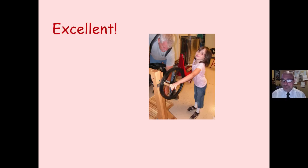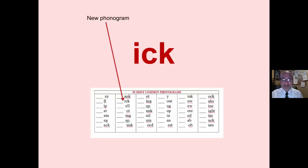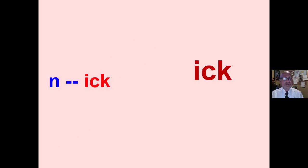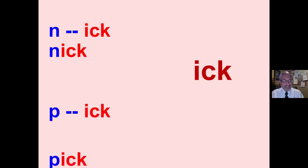And then we go on to review the next new phonogram. In this case, it's the IC. So the first part was reviewing yesterday's or the previous phonogram, ANK, and now we're introducing the new phonogram. They see it in color off to the right. N plus IC is — and the student says. Do it this way. P plus IC is — and the student reads.